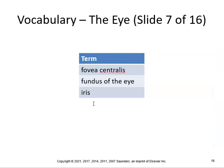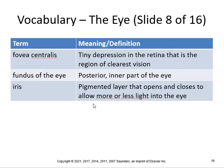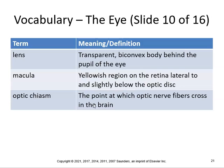Fovea centralis, fundus of the eye, and iris. Fovea centralis is a tiny depression in the retina that is the region of the clearest vision. The fundus is the posterior inner part of the eye — you also have a fundus on the stomach and the uterus, so it's a region. The iris is the pigmented layer that opens and closes to allow more or less light into the eye — that's your brown, green, or hazel eyes. The lens is the transparent biconvex body behind the pupil of the eye. The macula is a yellowish region on the retina, lateral and slightly below the optic disc. And the optic chiasma is the point at which the optic nerve fibers cross in the brain.